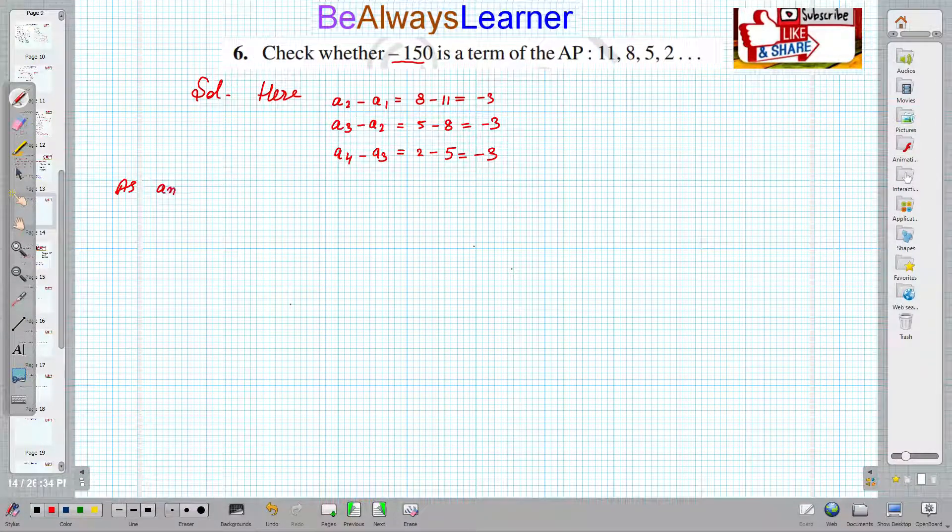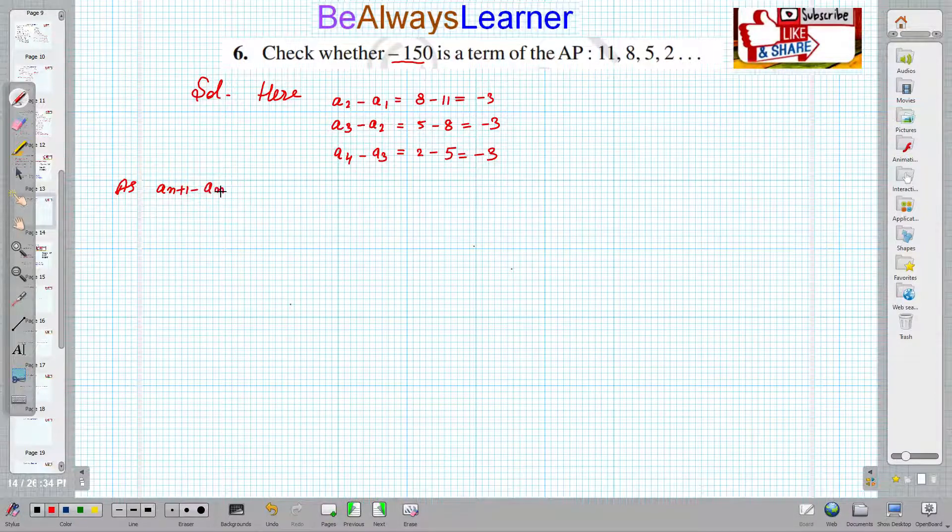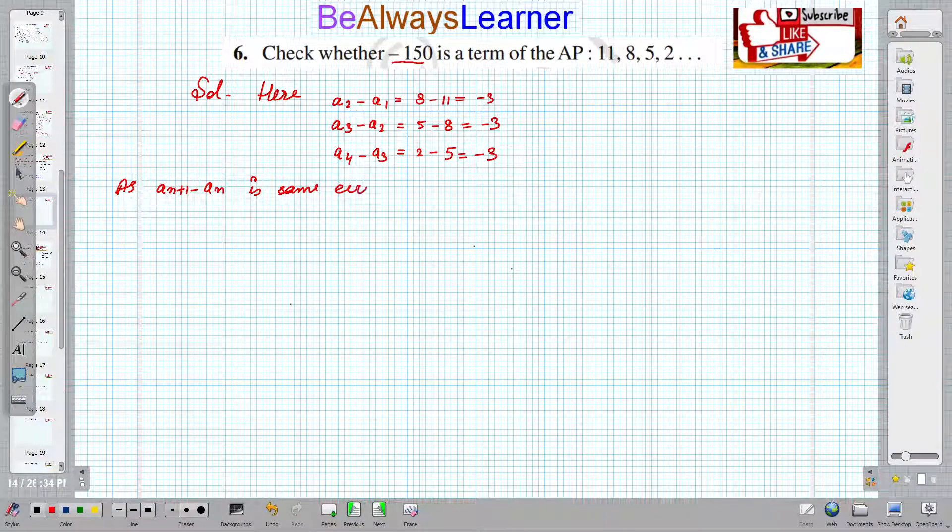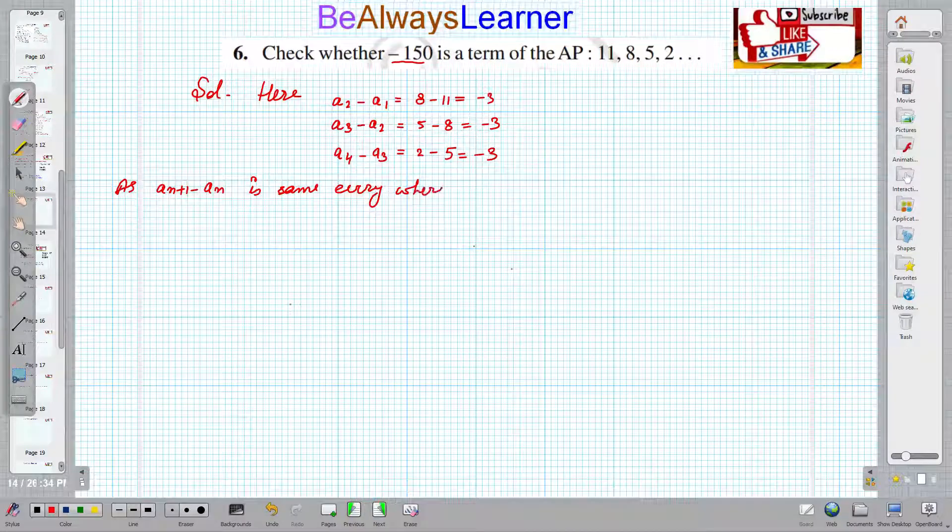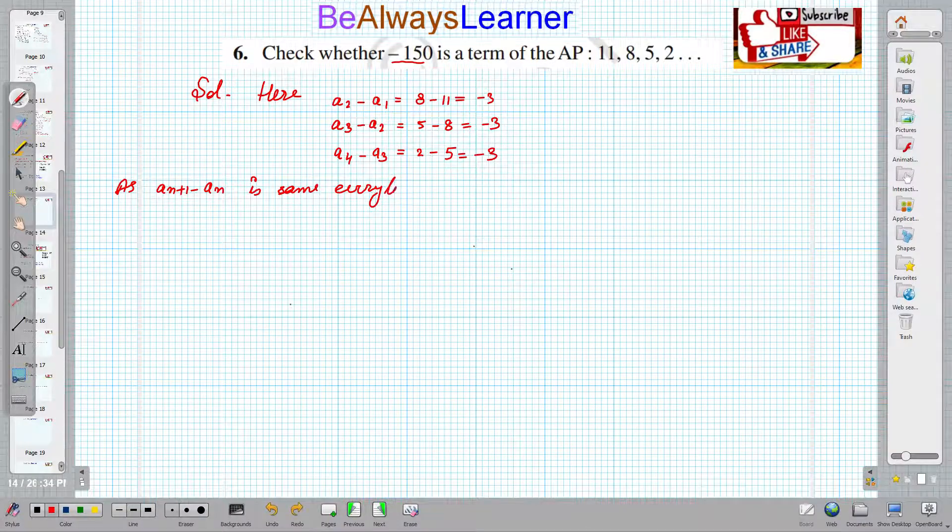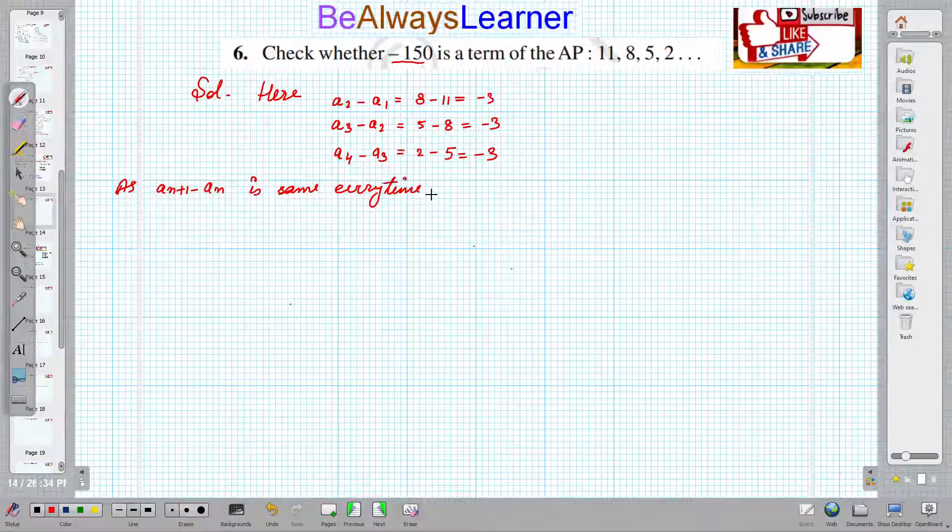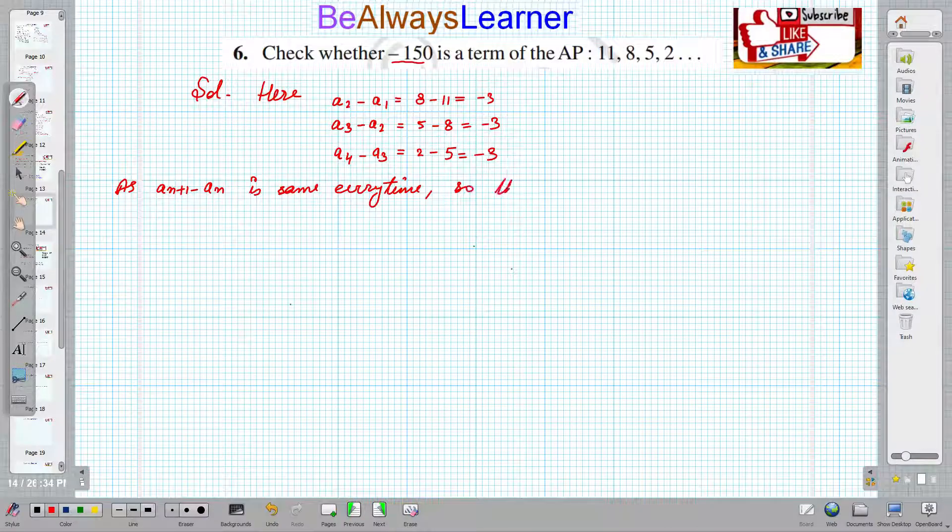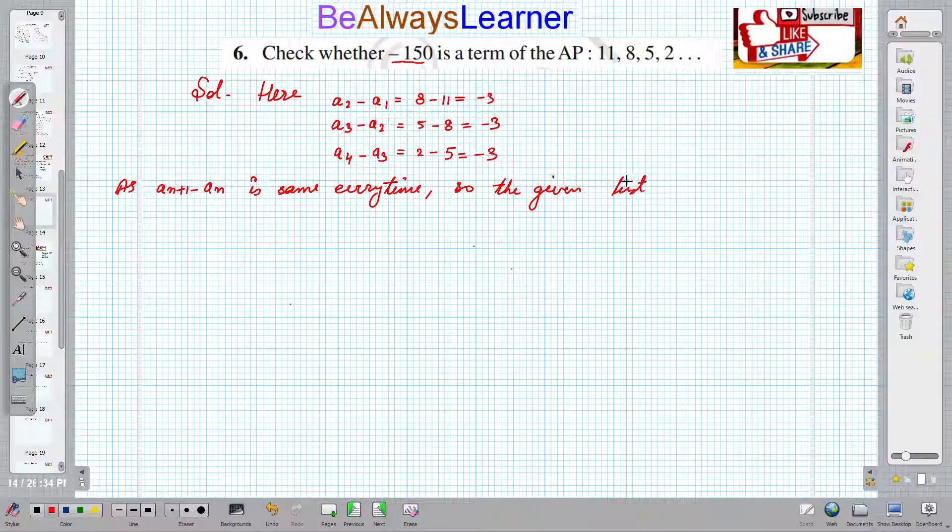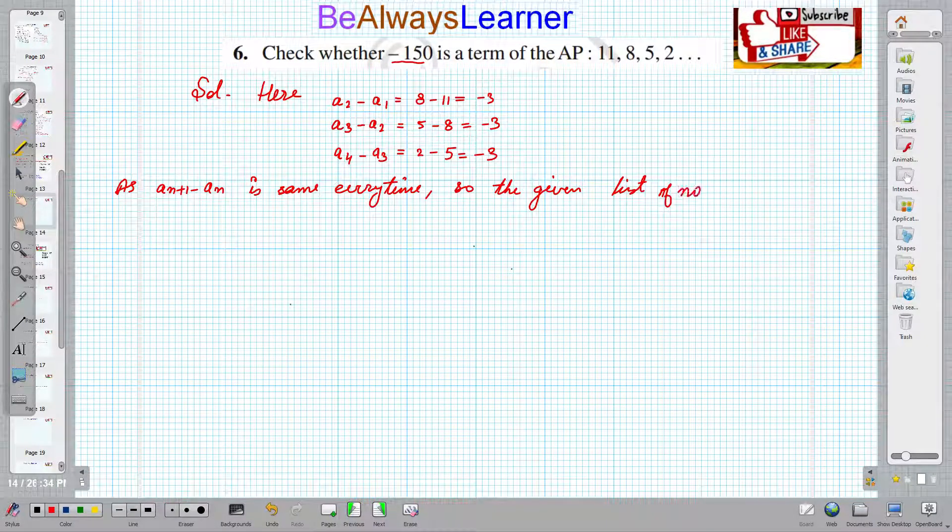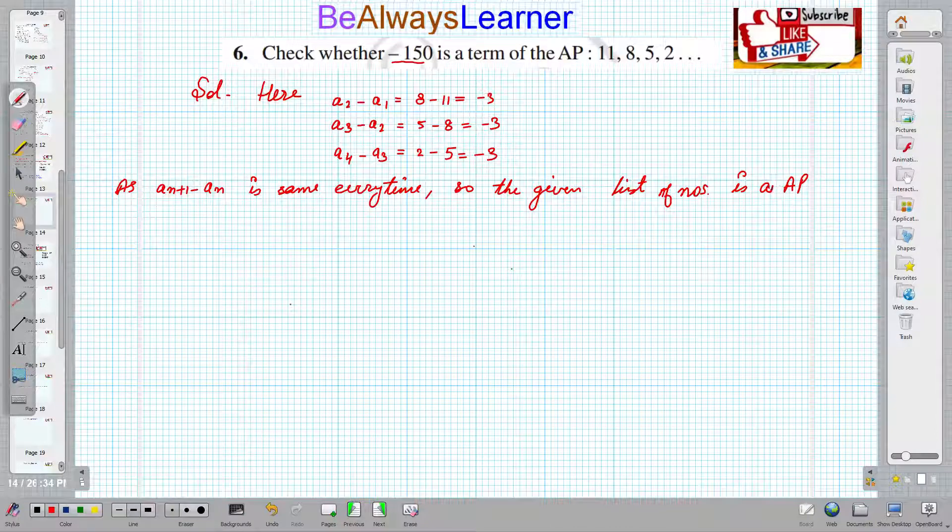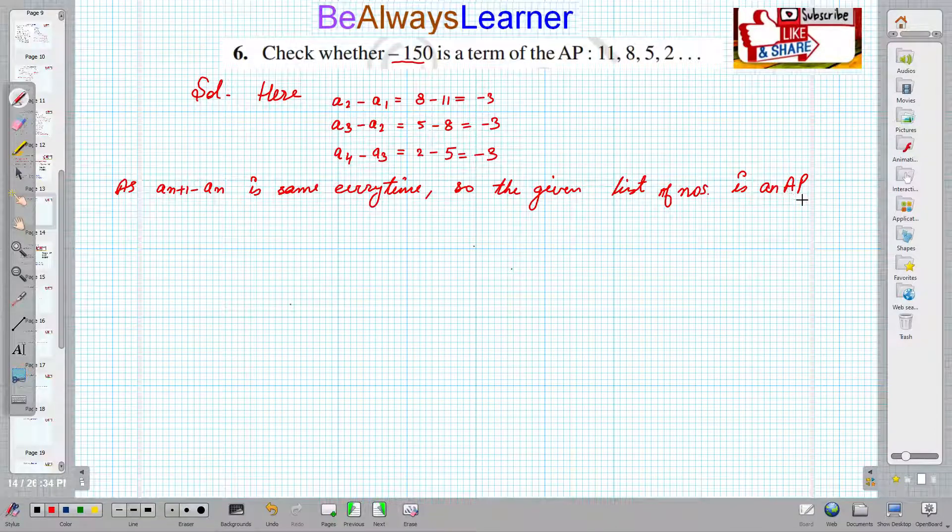We can write it as A(n+1) minus the previous term, the difference is the same everywhere, or we can say every time. So the given list of numbers is an AP.